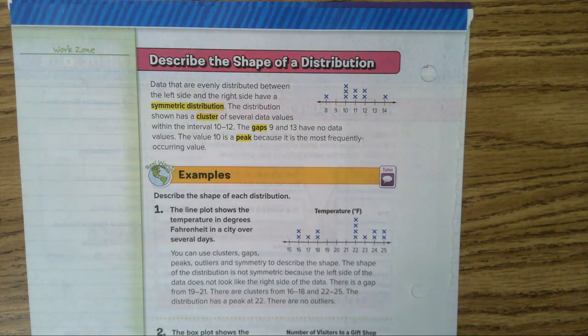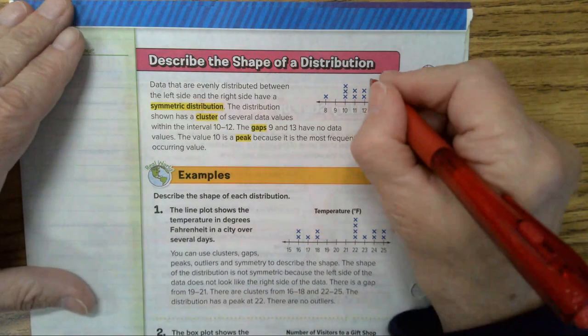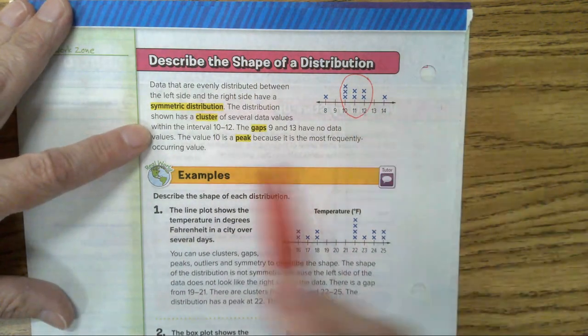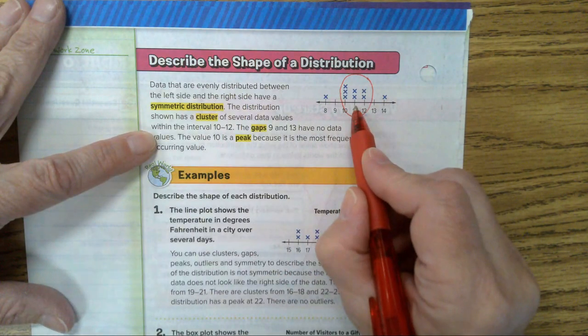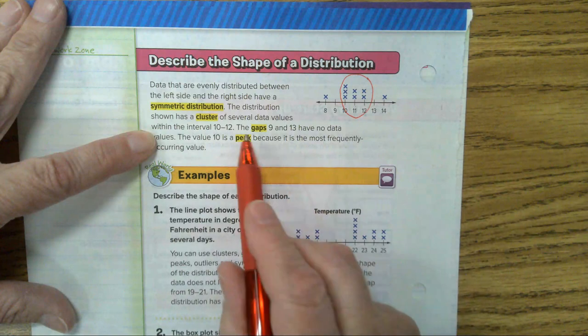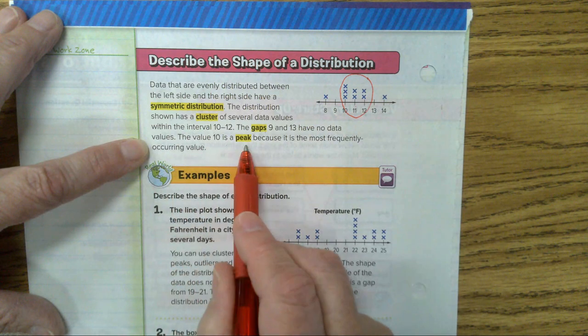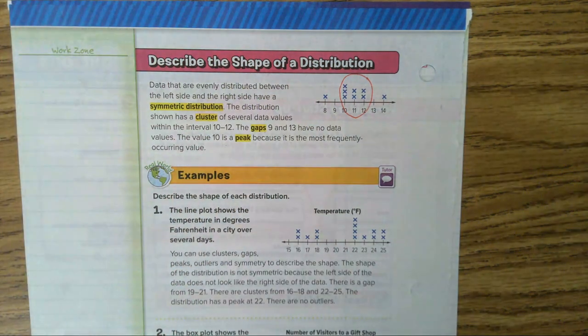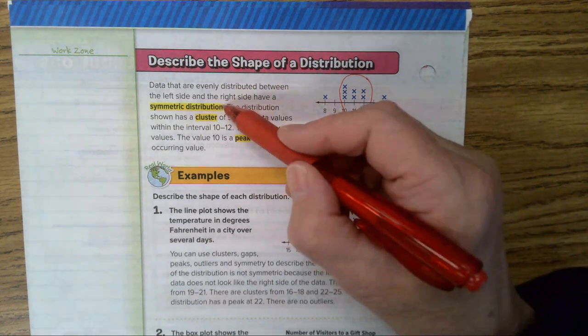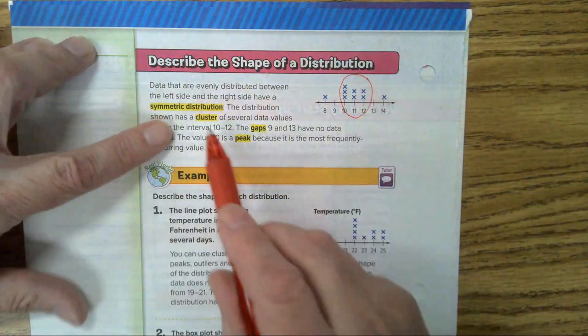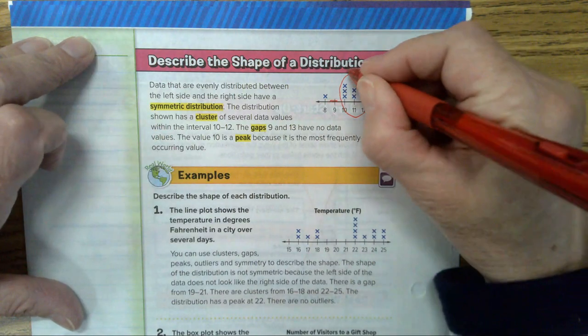The distribution shown here has a cluster of several data values. This is a cluster here. Within the intervals 10 to 12, they're grouped together. And then we have gaps. The gaps of 9 and 13 have no data values. And the value 10 is a peak because it is the most frequently occurring value. Does everyone understand those four terms? Everyone understands what symmetric looks like? What a cluster is? What a gap would be? Gaps, gaps, and a peak.